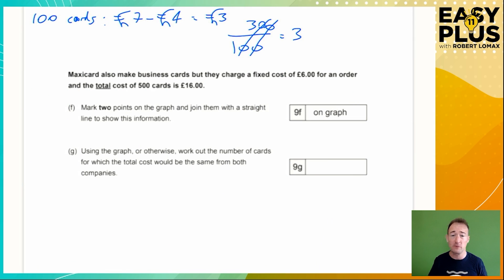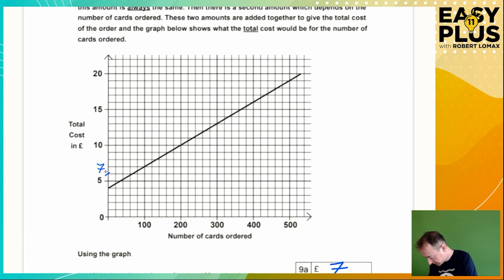MaxiCard also make business cards, but they charge a fixed cost of £6 for an order, and the total cost of 500 cards is £16. We need to mark two points on the graph and join them with a straight line. So the fixed cost of £6 is there. Even for the tiniest number of cards, you still have to pay a £6 fixed cost. And then for 500 cards, which is over here, we're going to be paying £16, which takes us to there. So we've got two points here, and now we need to join them together nice and neatly. That's a little bit of a wobbly line, but it's better than just drawing it freehand.